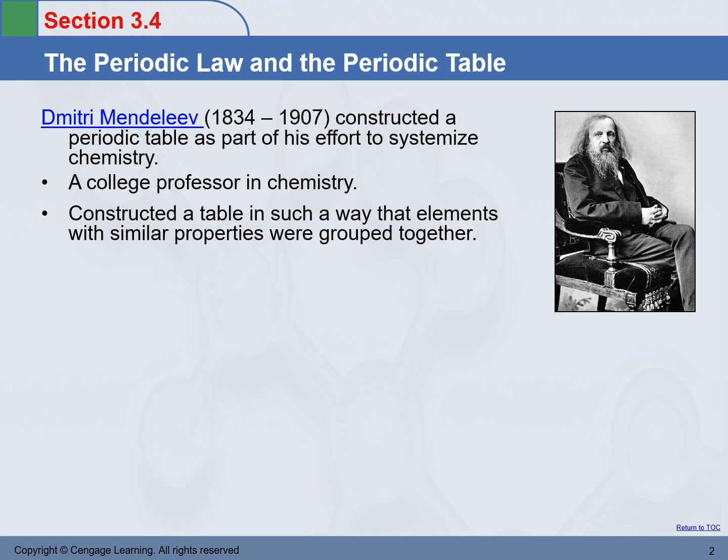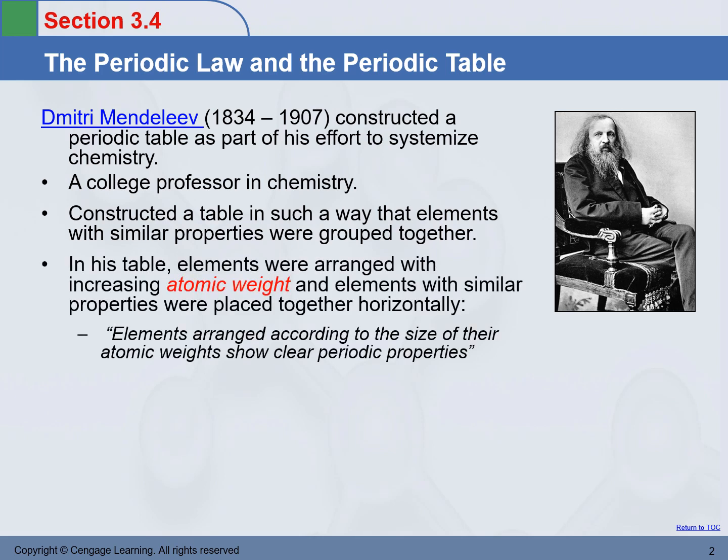He actually put that table into the textbook he wrote. In his table, the elements were arranged with increasing atomic weight. This is the first difference between his table and the current modern periodic table — the current periodic table is arranged with increasing atomic number, not atomic weight.